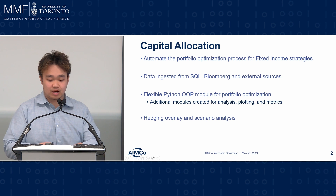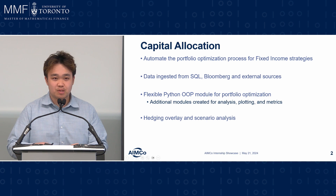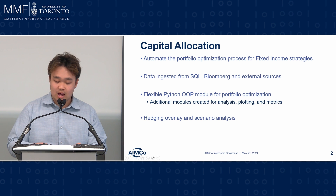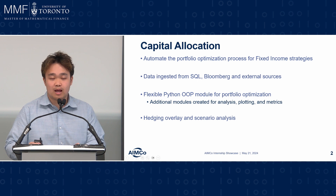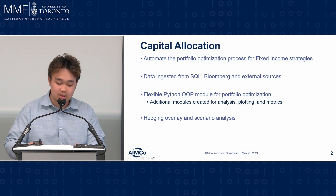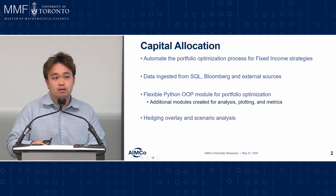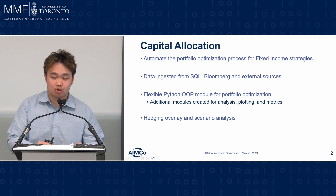In capital allocation, the process was previously manual and there was a lot of work. There was a lot of deliberation, it could be prone to error, and getting data from multiple sources was often tedious. Further analysis on top of this was even more challenging.